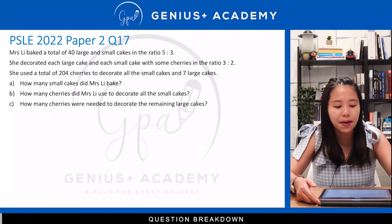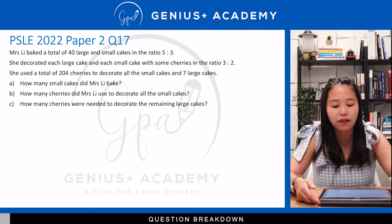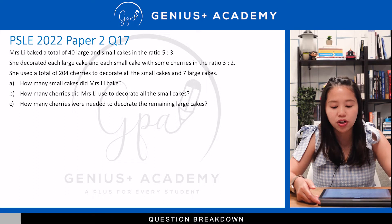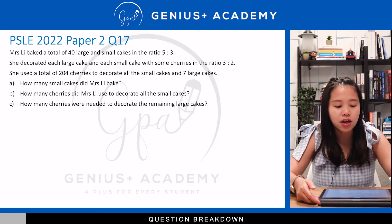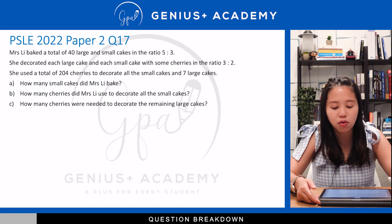Mrs. Lee baked a total of 40 large and small cakes in the ratio of 5 to 3. She decorated each large cake and each small cake with some cherries in the ratio of 3 to 2. She used a total of 204 cherries to decorate all the small cakes and 7 large cakes.